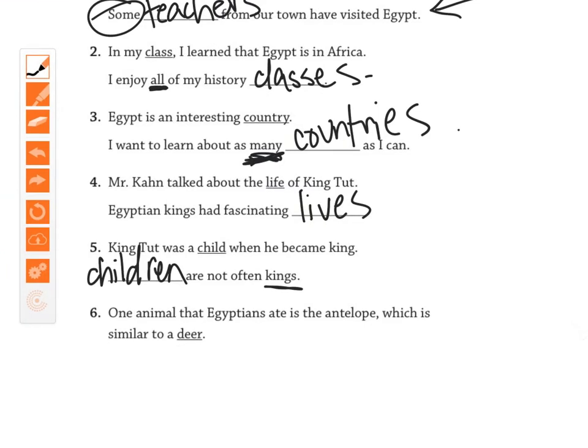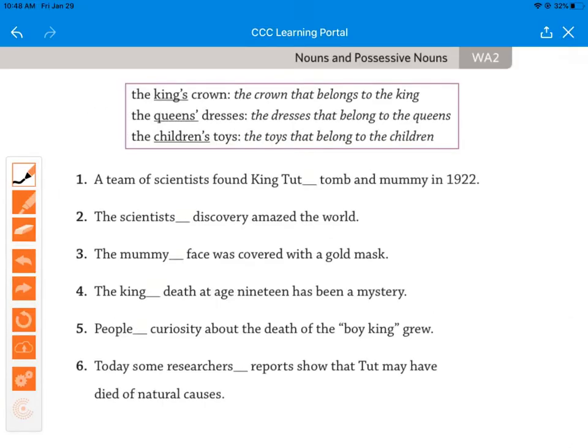The last one: 'One animal that Egyptians ate is the antelope, which is similar to the deer.' Now, there are some nouns that don't change at all — so we just keep them the same.